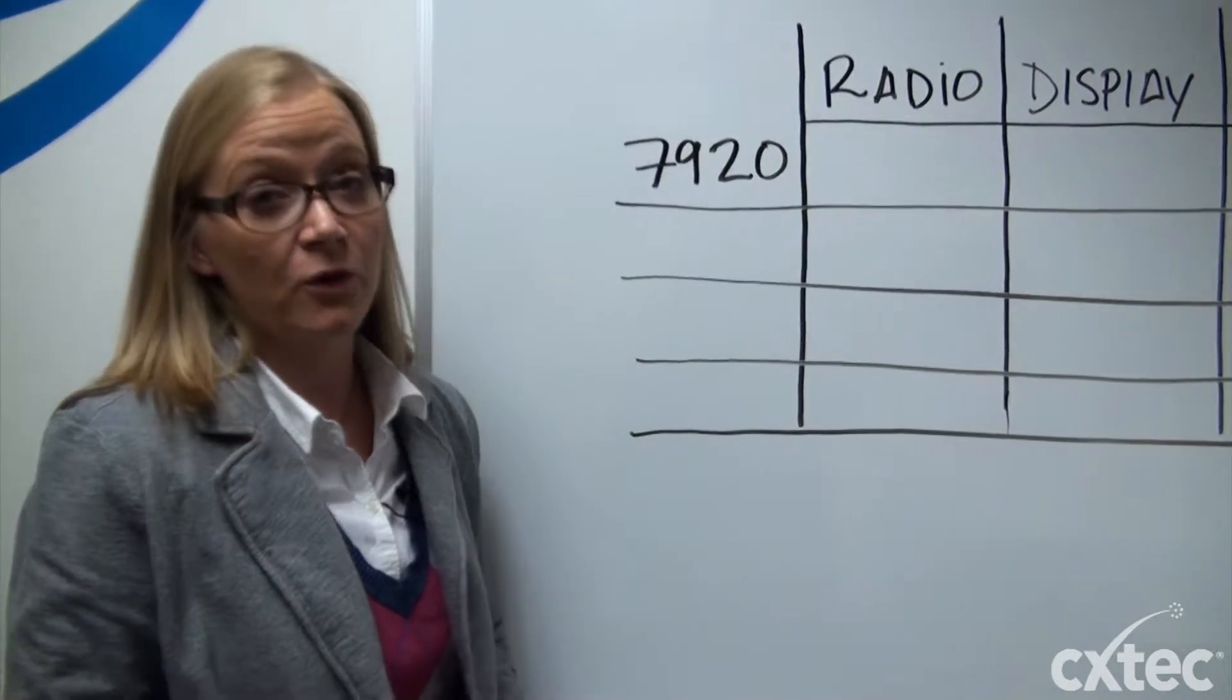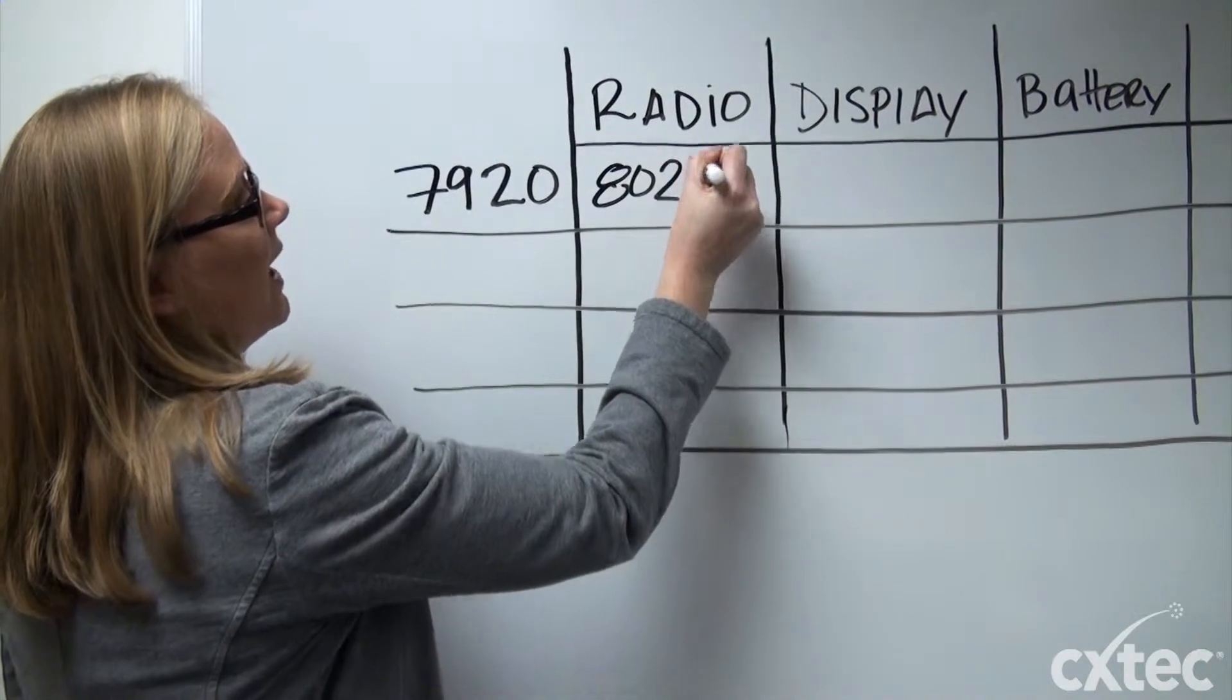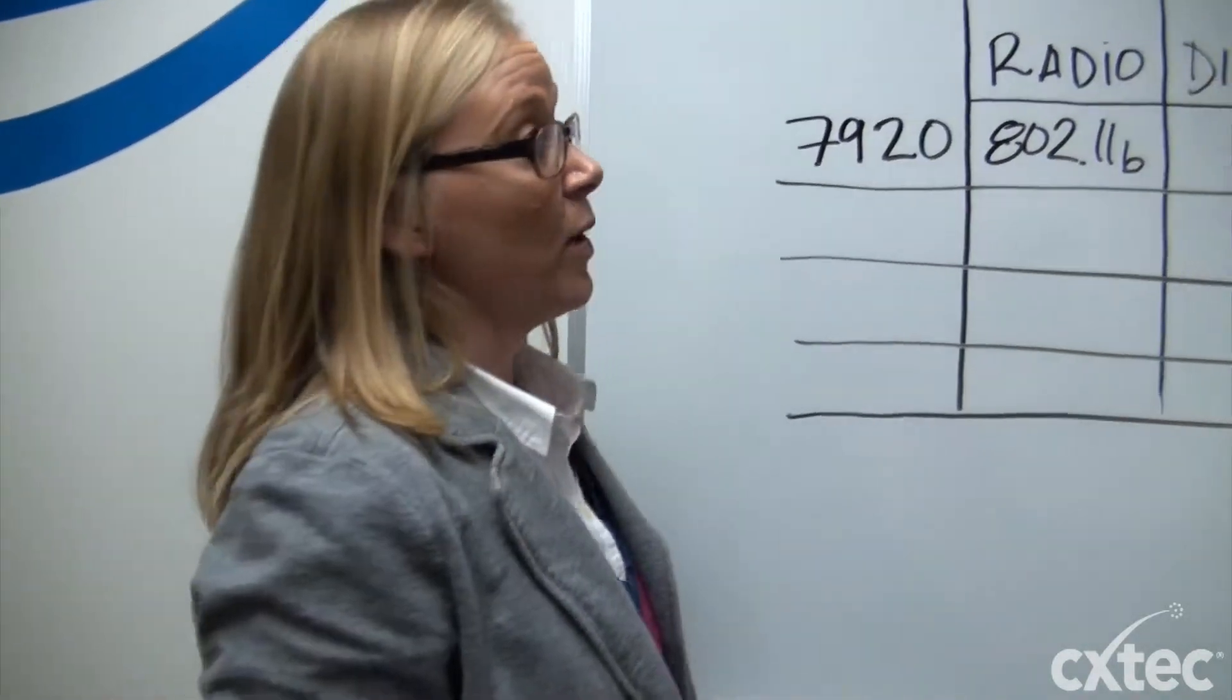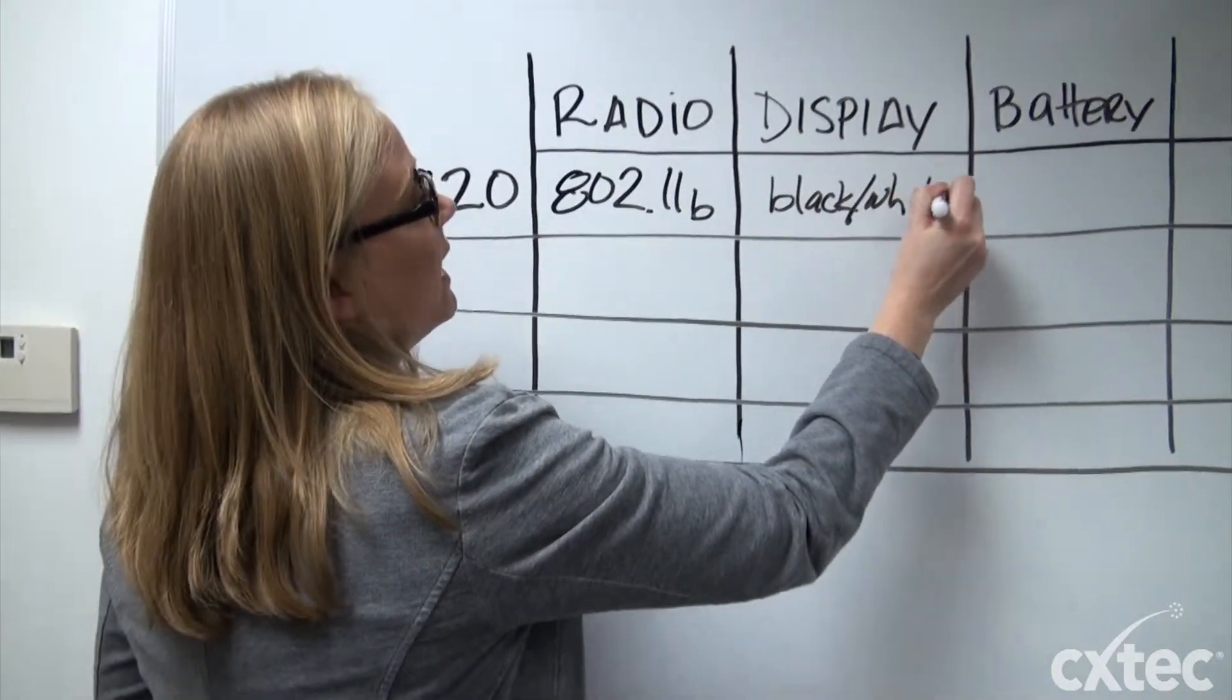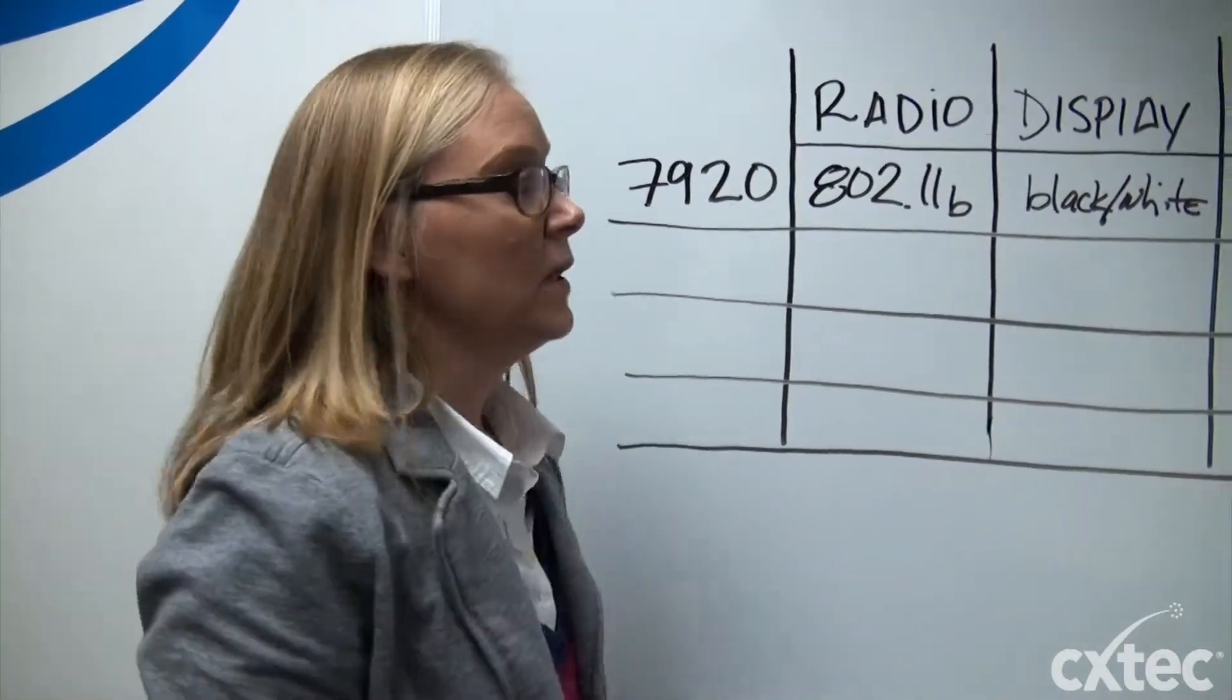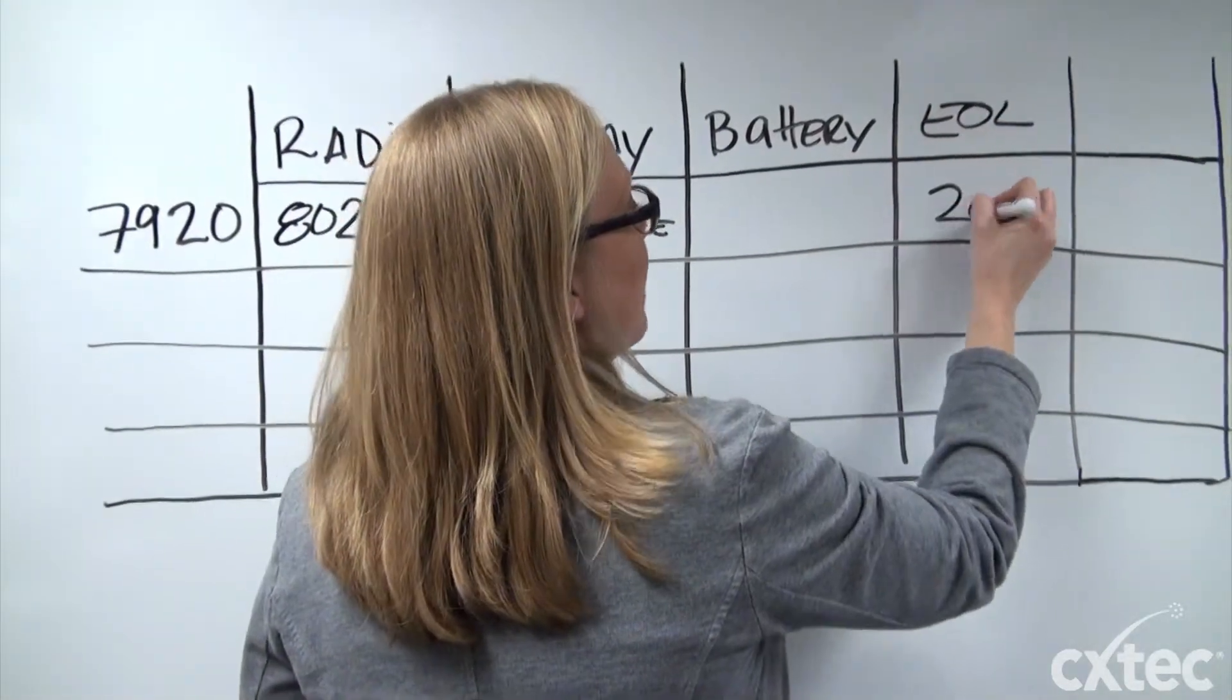It was the first wireless phone that came out from Cisco. The radio on the phone was an 802.11b only radio. It had a black and white or monochrome display only and it did have the standard length battery from Cisco. This phone was end of life in 2007.